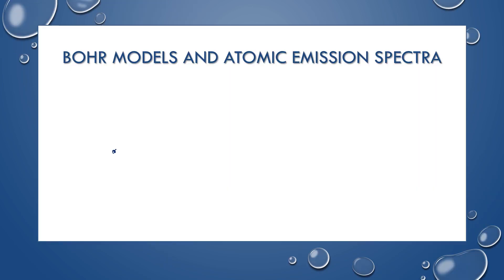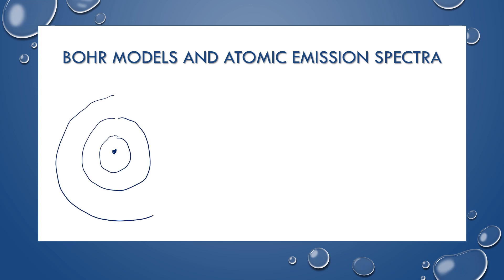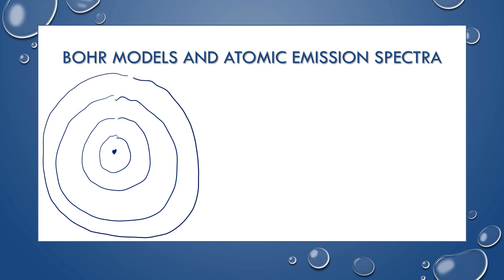Let's review Bohr models really quick. You have your protons and neutrons in the nucleus, and then your energy levels around the outside. The lowest energy level is n equals 1, n equals 2, n equals 3. You get higher energy levels as you go further away from the nucleus. An electron would have to gain energy to move further away, and the electron would have to release energy to move back down.